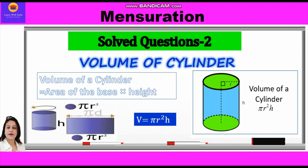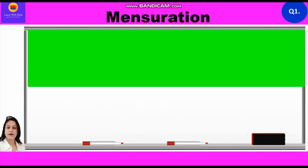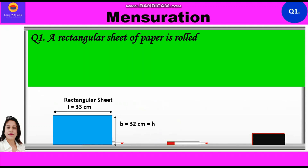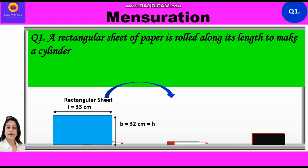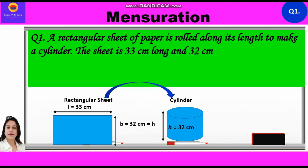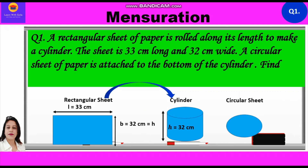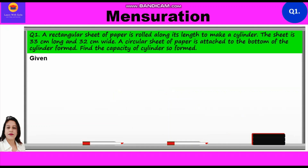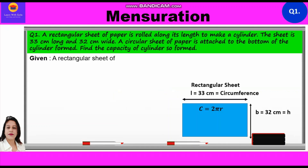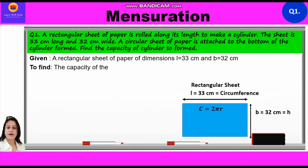Now let's start question number 1. A rectangular sheet of paper is rolled along its length to make a cylinder. The sheet is 33 cm long and 32 cm wide. A circular sheet of paper is attached to the bottom of the cylinder. Find the capacity of the cylinder so formed. Given: a rectangular sheet of paper with length equal to 33 cm and breadth equal to 32 cm. We need to find the capacity of the cylinder, that is its volume.